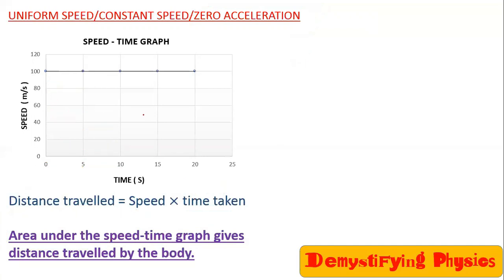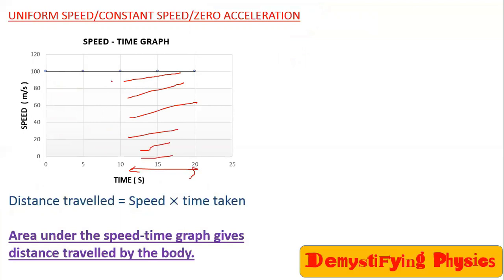If you are asked for the distance traveled between 10 and 20 seconds, you find only this area — this rectangle area. The breadth of the rectangle is 10 and the length is 100, so 100 into 10 equals 1000 meters.